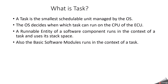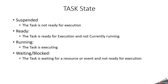At the same time, the basic software modules also run in the context of a task. Before discussing the types of tasks in more detail, we should first understand the task states. A task has the following states: suspended, ready, running, and waiting or blocked. Suspended means the task is not ready for execution. Ready means the task is ready for execution but not currently running. Running means the task is currently executing. Waiting or blocked state means the task is waiting for a resource or event and is not ready for execution.